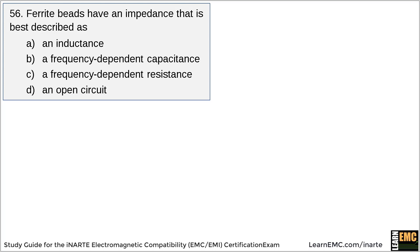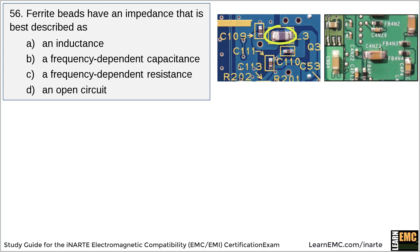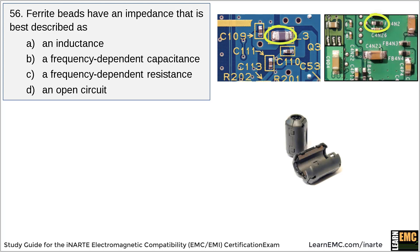In this problem, we want to identify the best way to describe the impedance of ferrite beads. A ferrite bead is a passive component that can help to attenuate high frequency noise in certain situations. Ferrite beads are mounted to circuit boards. Ferrites on cables, on the other hand, are usually called ferrite clamps or just ferrites.